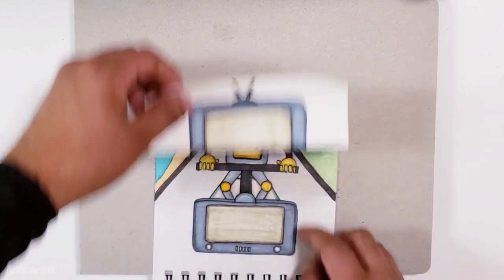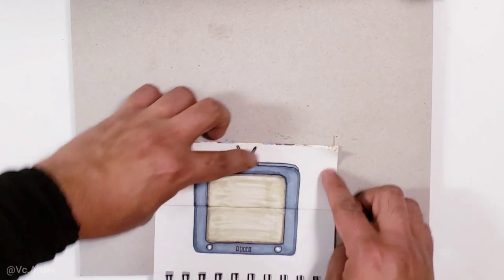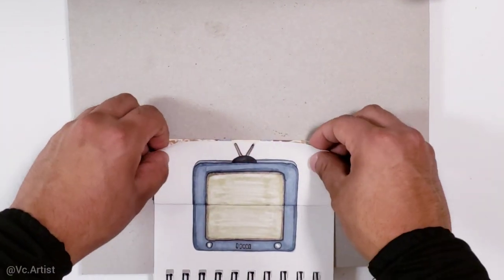And one tip to do it this way is basically I use like a tissue for this part to basically fade it, and it's not going to show anything.